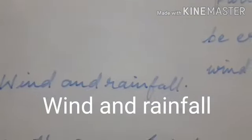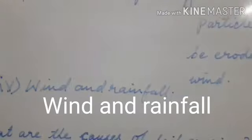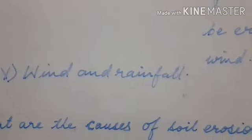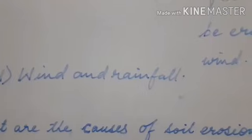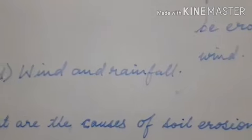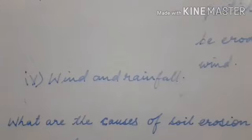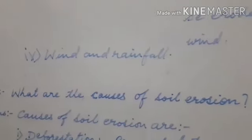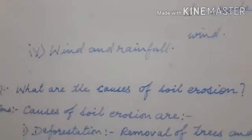Our fourth point is wind and rainfall. Wind and rainfall are the main agents of erosion. Whenever the soil is loose — due to deforestation, overgrazing, or improper farming — wind and rainfall erode the total soil.